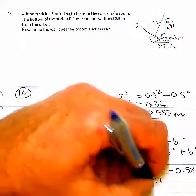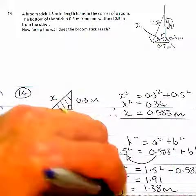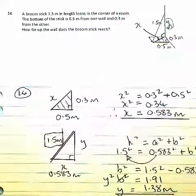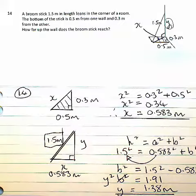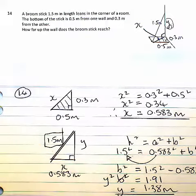And the square root. So the broomstick reaches 1.38 meters up the wall.